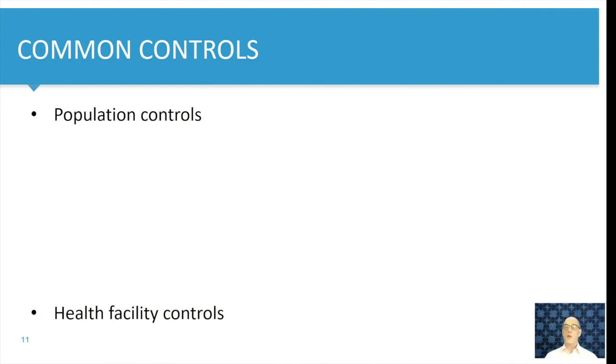Now, what are common controls? We can make two largest things. We can have population controls and health facility controls. And in population control, we can look at controls that derive from an actually defined cohort. A cohort study that is running and where you have the luxury that cases and controls are developing over the time of the cohort. In this instance, we talk about a nested case control study. You just have to wait until the end of the cohort study to define your two groups.